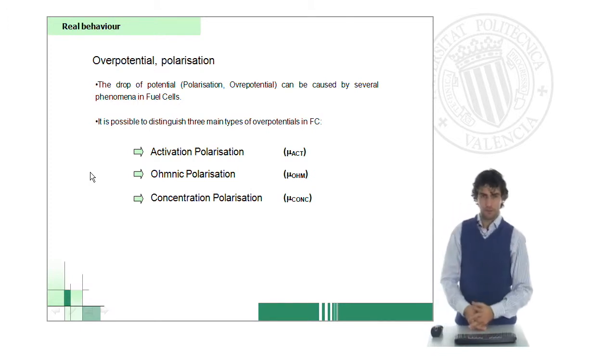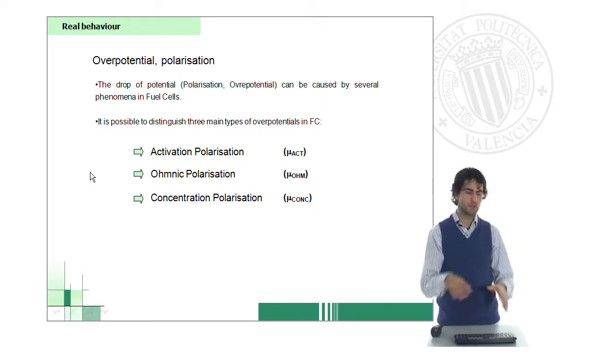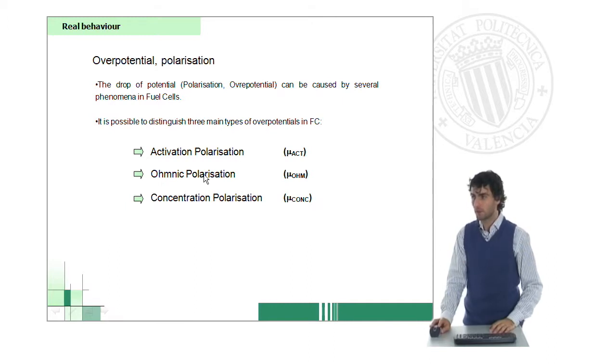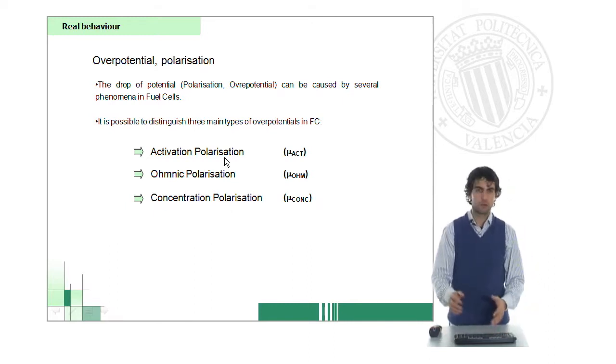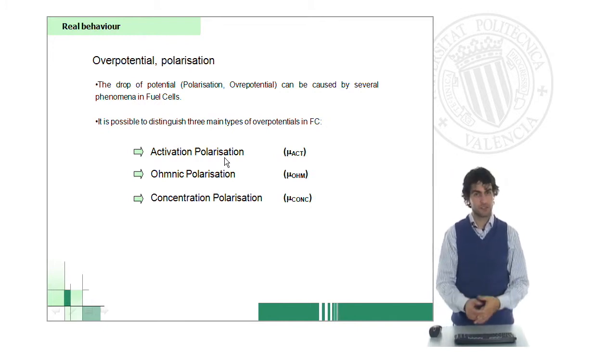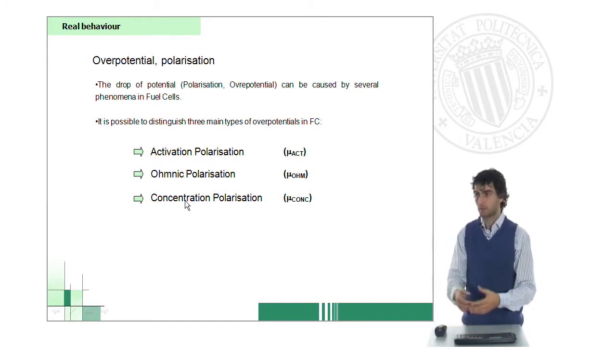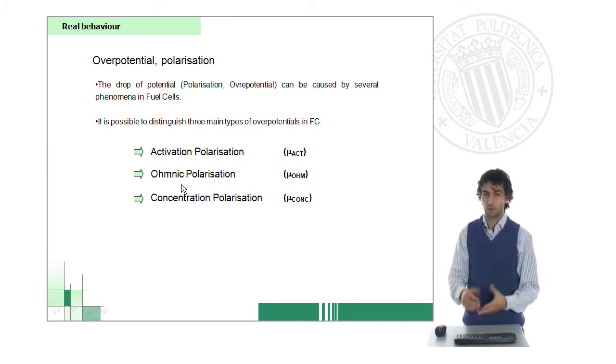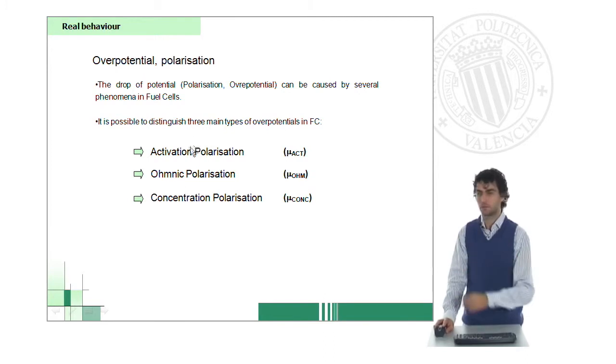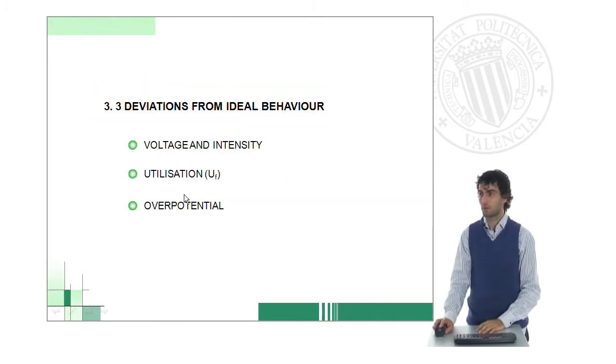I just want to mention before I finish that there are three main causes for overpotential, three main causes for this decrease in the potential of a fuel cell: activation polarization, ohmic polarization, and concentration polarization - or activation overpotential, ohmic overpotential, and concentration overpotential. They are completely synonyms. In other presentations, we will study with further detail the chemical or physical causes for this overpotential.